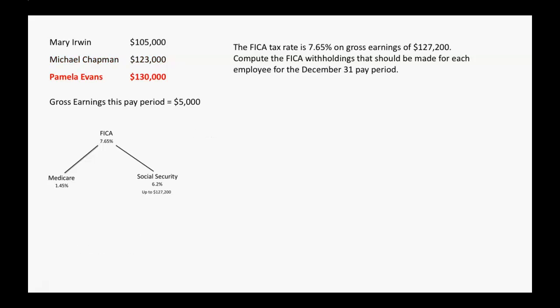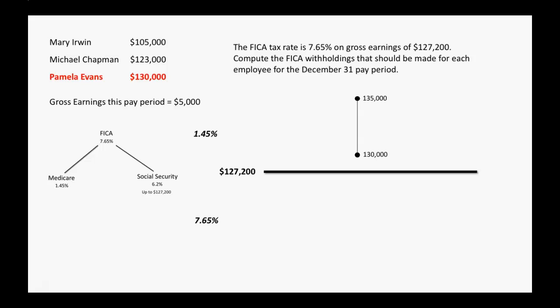Now Pamela Evans. We draw this chart once again and plot where Pamela started, which is at $130,000 — she's already above the threshold going into this final pay period. She makes $5,000, going up to $135,000, and all $5,000 of that is above the threshold. So all $5,000 gets taxed at 1.45%: 5,000 × 1.45% = $72.50. That would be the FICA withholdings in Pamela Evans's last paycheck of the year.